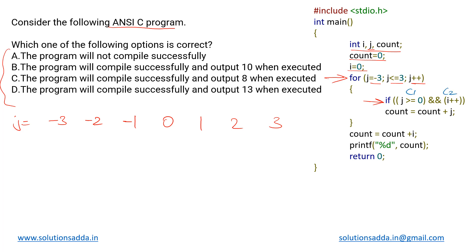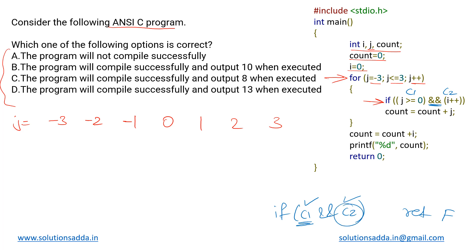In this if condition there are two conditions — let's call them c1 and c2 — with an AND operator between them. Because of the short-circuiting property, if c1 is false we will not check c2 and will directly return false. Only if c1 is true will we then check c2 and return either true or false.